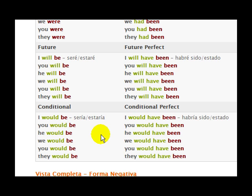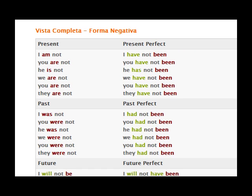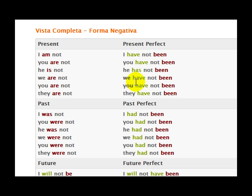We go down a little further into the complete view — the negative form. In English, the negative form uses 'not.' I am not — and in Spanish, you use 'no.' I am not, you are not, he is not, we are not, you are not, they are not. And in the present perfect: I have not been, you have not been, he has not been, we have not been, you have not been, they have not been. As you can see, there is only one change, and it is in the third person as far as the verb is concerned.